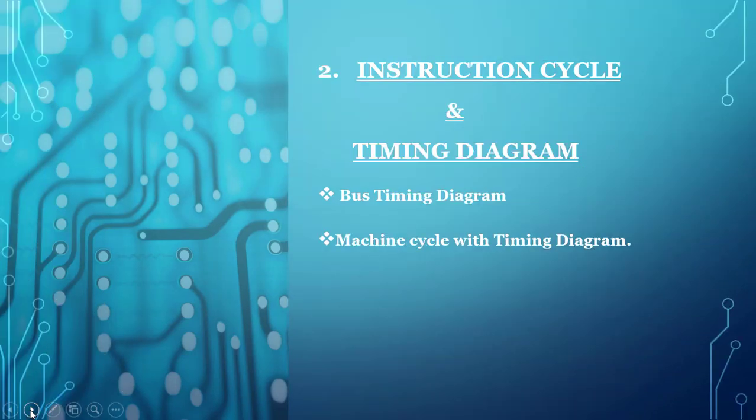The second unit is Instruction Cycle and Timing Diagram. In 8085, there are totally 74 types of instructions. For each instruction, the 8085 specifies an instruction format which includes the opcode. There are three types of instructions: single byte, two byte, and three byte. The length denotes how much space is occupied by the instructions. These instructions can be grouped into data transfer, arithmetic, logical, branch, stack, and other operations.